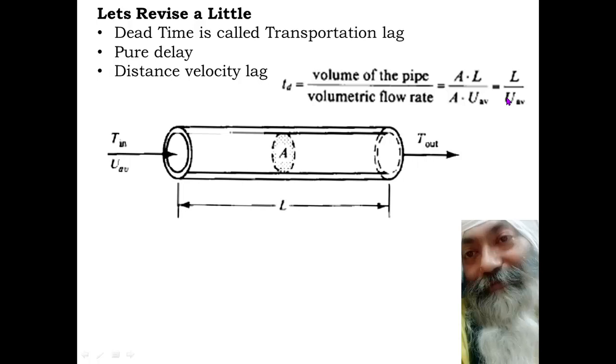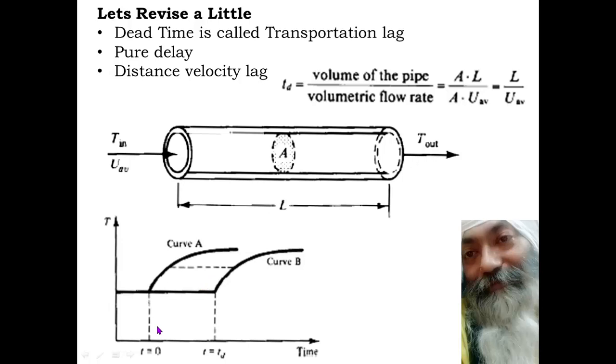Now, if at all at time t equals zero you see that the temperature was moving along curve A, then the same effect will be felt at the outlet of the pipe along curve B, and this will be taking place exactly after time t equals td. And this td is given by the expression as we have seen over here, L divided by U, that is length of the pipe divided by the average velocity.